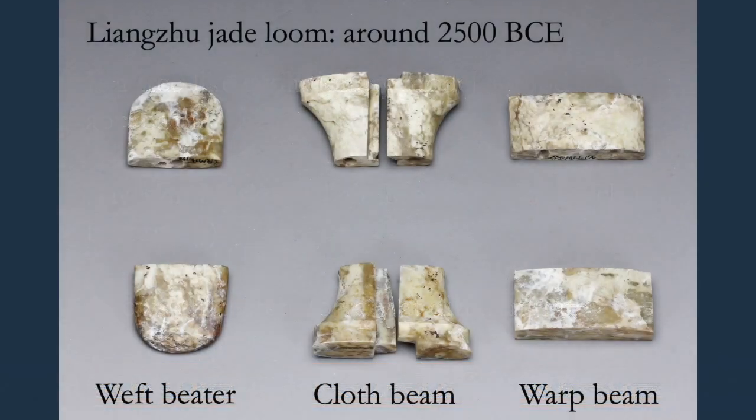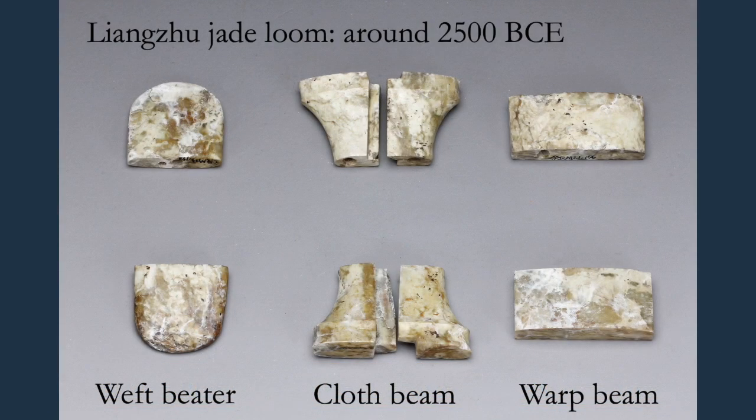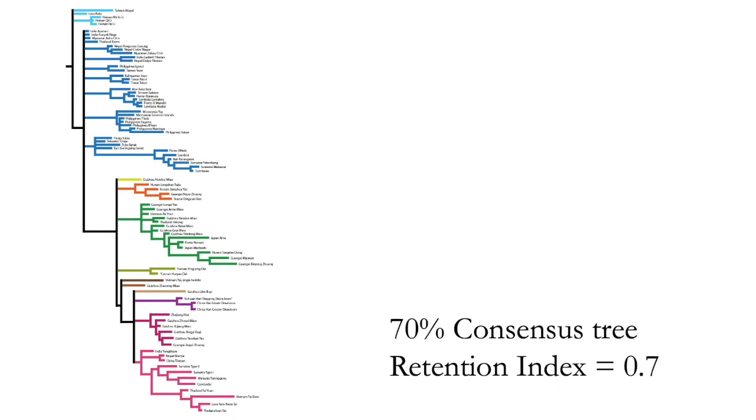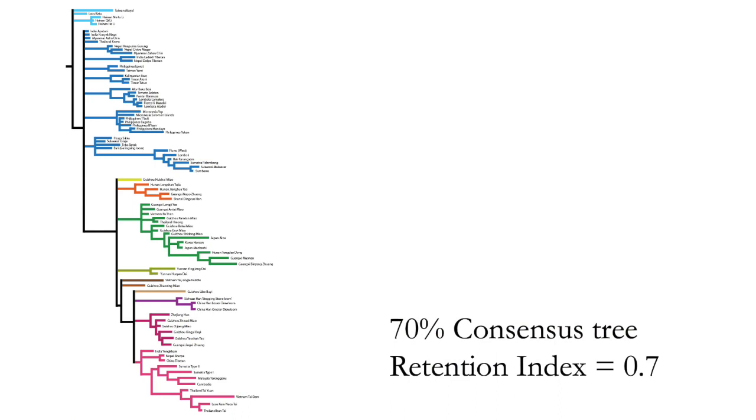This turns out to be important in looms, where some features are stable for long periods, but other features can change relatively rapidly. To root the tree, I'm going to use this loom that I discussed in the first video, the oldest recognizable loom in the region. As I mentioned, the Bayesian analysis yields a group of trees. These can be summarized using a consensus tree, which in essence is a phylogenetic model for the evolution of our group of looms.